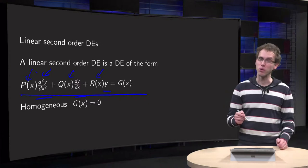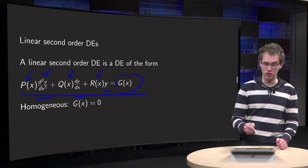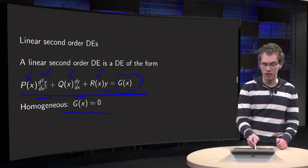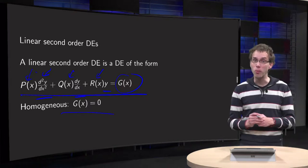One more name: if the right hand side g(x) equals zero, then the differential equation is called homogeneous.